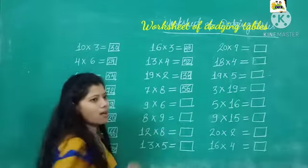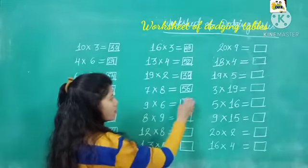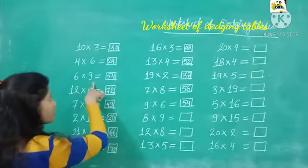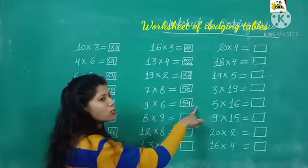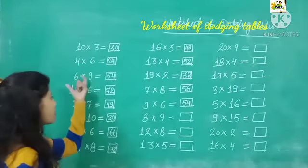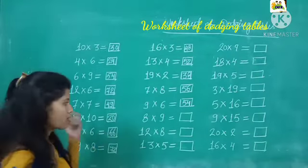9 sixes are. What is 9 sixes are? 54. Dekho, yaha pe 6 nines are kya? Answer 54. 9 sixes are kya? Answer also same. So, sirf humne inka sequence change kiya as tables.